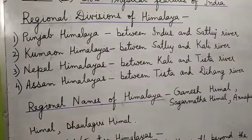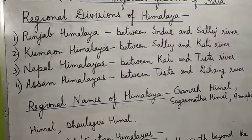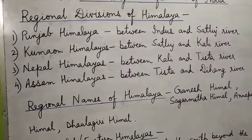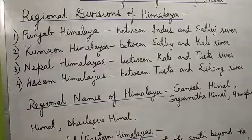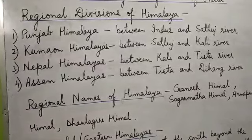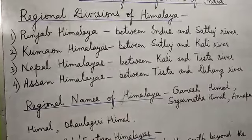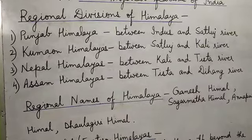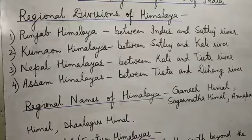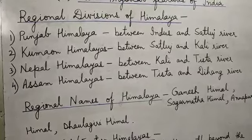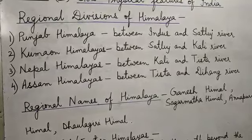All the major rivers of the Indus river system flow through Punjab Himalayas — Jhelam, Chenab, Satlaj. A large portion of Punjab Himalaya is in Jammu and Kashmir and Himachal Pradesh, and therefore they are also called Kashmir and Himachal Himalaya. The Karakoram, Ladakh, Pirpanjal, Zaskar, and Dhauladhar are all major ranges of Punjab Himalaya.